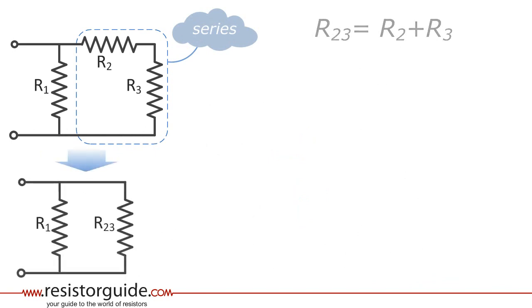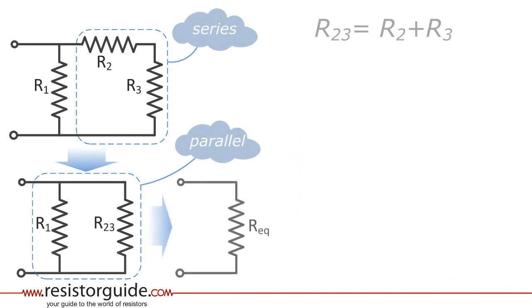Now we can simplify the circuit and we have a group with just two resistors in parallel, R1 and R23. The inverse of the equivalent resistance from this group is equal to the sum of the inverse resistances of R1 and R23.